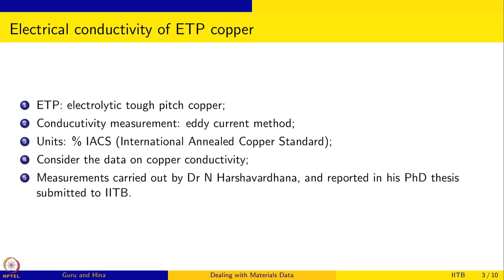As the first example, we are going to use the electrical conductivity of ETP copper. ETP copper is electrolytic tough pitch copper — it is very pure, commercially pure copper, used in many practical applications where its conductivity is very important. In the industrial setting, the conductivity is measured using the eddy current method.